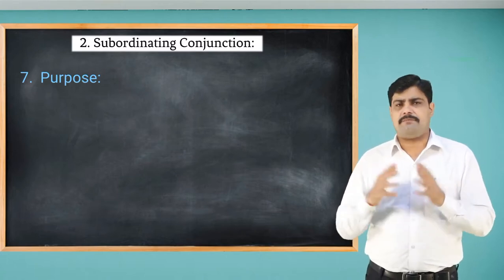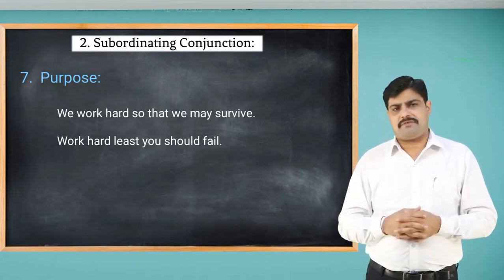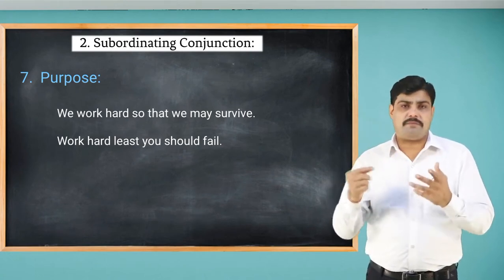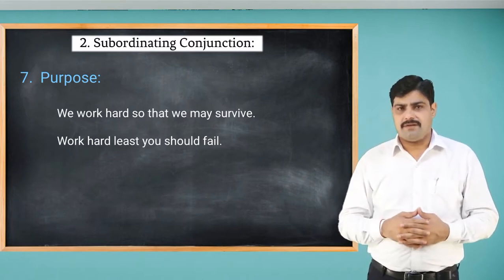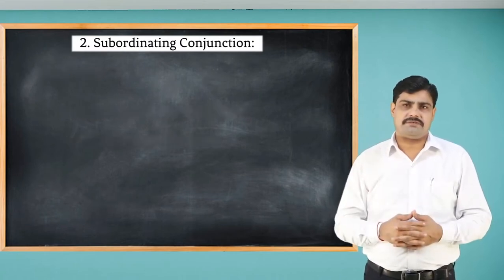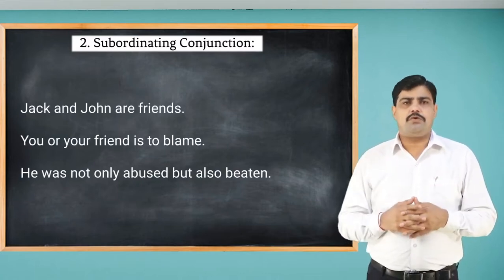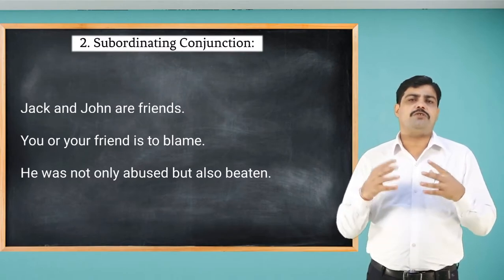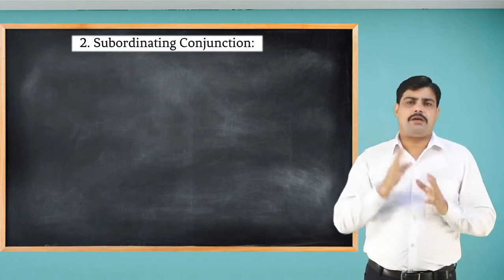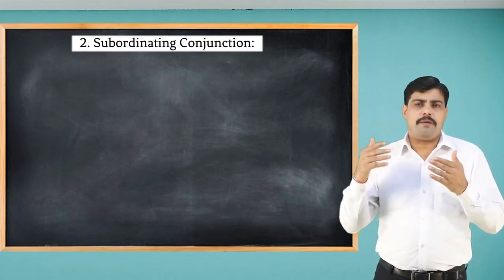For purpose, we also use some conjunctions. For example: 'We work hard so that we may survive' — 'so that' is used for purpose. 'Work hard lest you should fail' — 'lest' is a conjunction used for purpose. Some more examples: 'Jack and John are friends.' 'You and your friend are to blame.' 'He was not only abused but also beaten.' Here 'and' and 'but' are the conjunctions used.